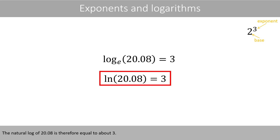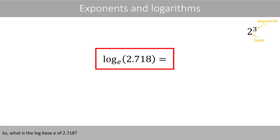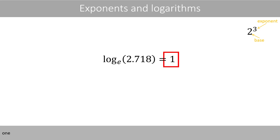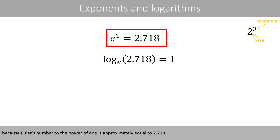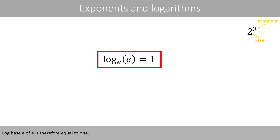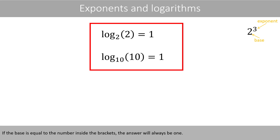The natural log of 20.08 is therefore equal to about 3. What is the log base e of 2.718? 1, right? Because Euler's number to the power of 1 is approximately equal to 2.718. Log base e of e is therefore equal to 1. If the base is equal to the number inside the brackets, the answer will always be 1.